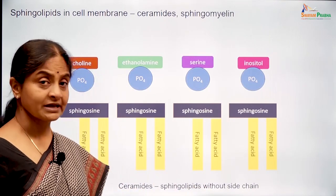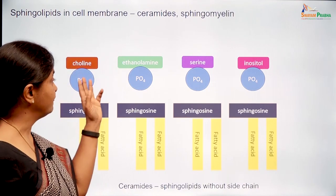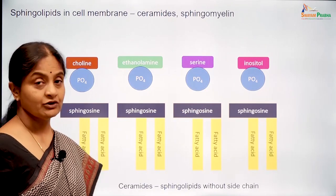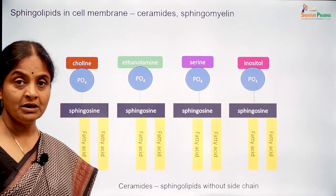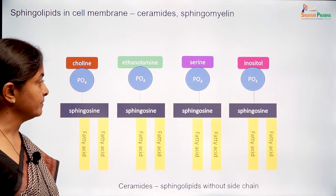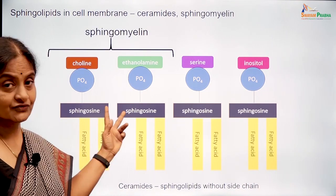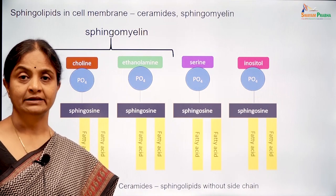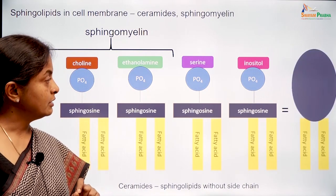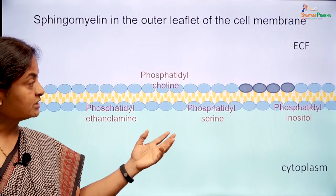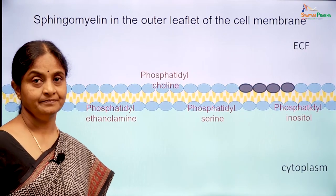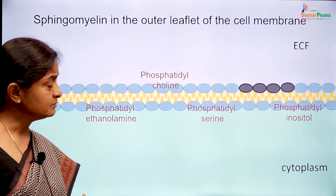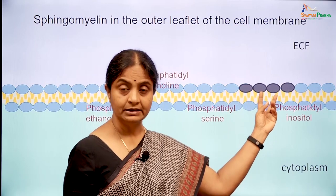Ceramides can also take on phospho side chains — phosphocholine, phosphoethanolamine, phosphoserine or phosphoinositol — and then they form sphingophospholipids. These sphingophospholipids are specifically referred to as sphingomyelin, and sphingomyelin is found on the outer leaflet of the cell membrane, not on the inner leaflet. We will come back to sphingomyelin a little later.